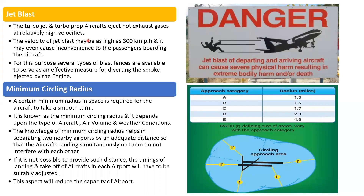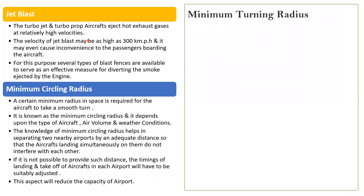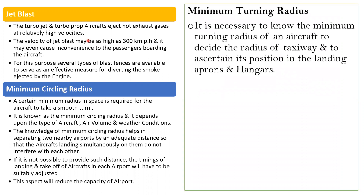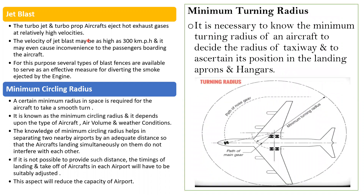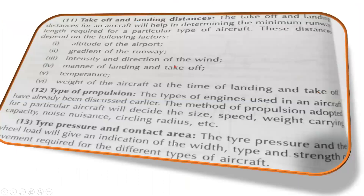The next characteristic is minimum turning radius. It is necessary to know the minimum turning radius of an aircraft to decide the radius of a taxiway and to determine its position in the apron and hangar areas. In the diagram, the center of the aircraft is shown, and the minimum turning radius is measured from that center point — representing the path of the nose wheel when turning without interfering with anything.